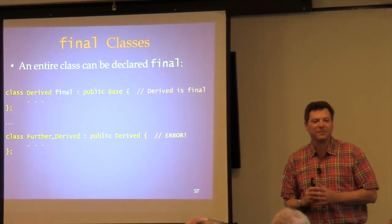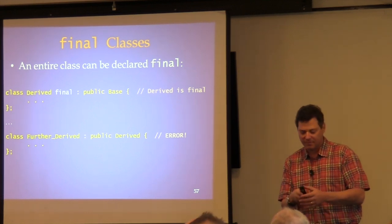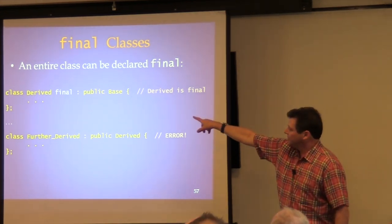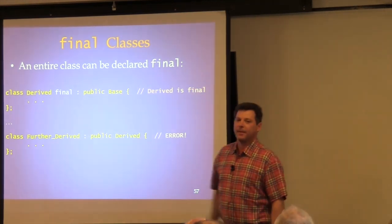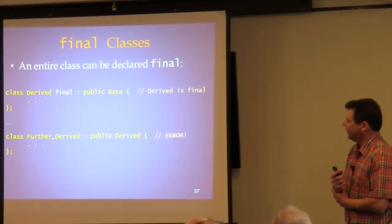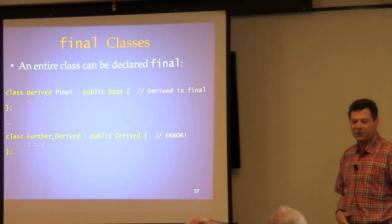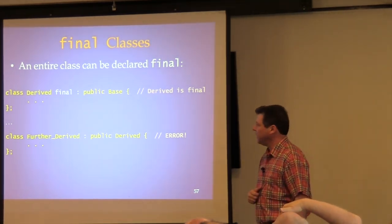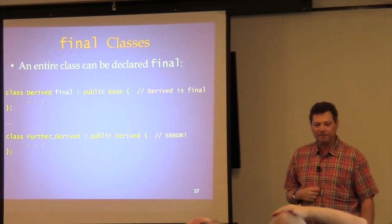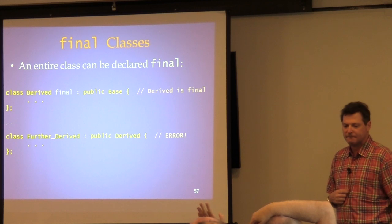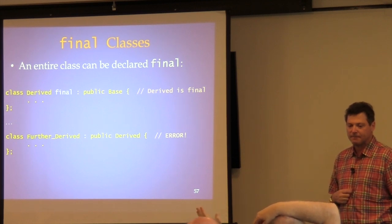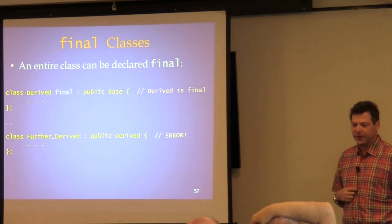A class can also be declared final — that's a contextual keyword too, and it doesn't break any legacy code. A number of STL containers like vector don't have virtual destructors, so there's a performance cost for that. Is it legal to inherit from a vector? Sure. But you better not try to use a mixture of vectors and super-vectors polymorphically — that leads to serious trouble.